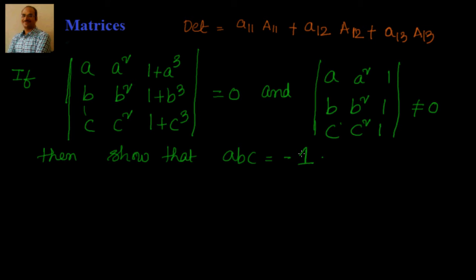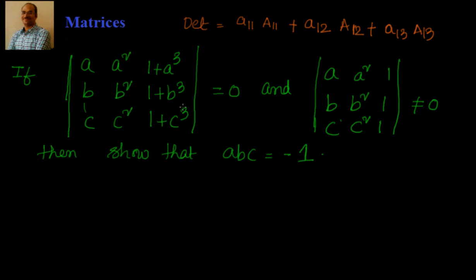The approach to solve this problem: if I expand the determinant in some way, I should be able to get a factor of (ABC + 1). Since we're told the other factor is not equal to 0, then ABC + 1 should equal 0, giving ABC = minus 1.